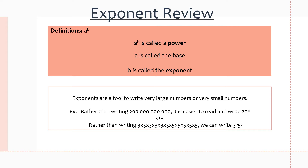Exponents are a tool to write a very, very large number or a very, very small number. So rather than writing out 20,000,000,000,000, we write 20 to the power of 11. And the same way goes for 3 times 3 times 3 — we write 3 to the power of 6 — and 5 to the power of 5.